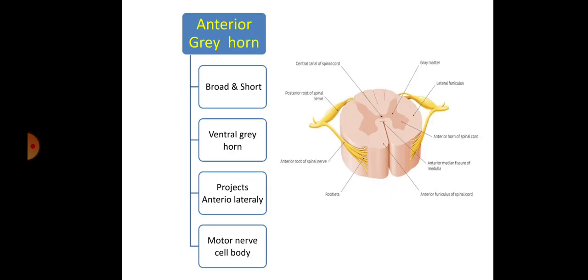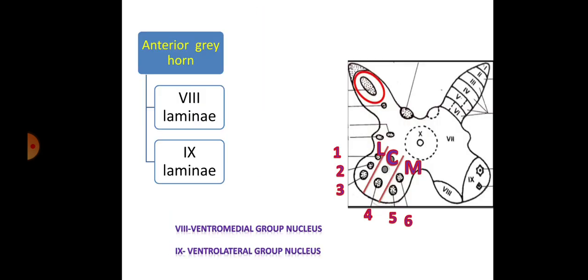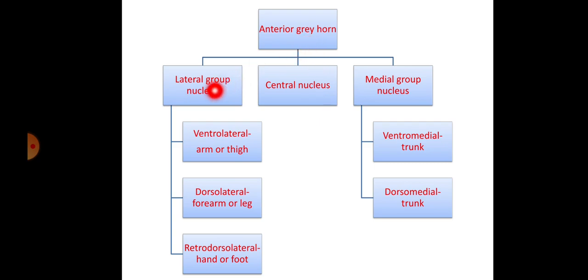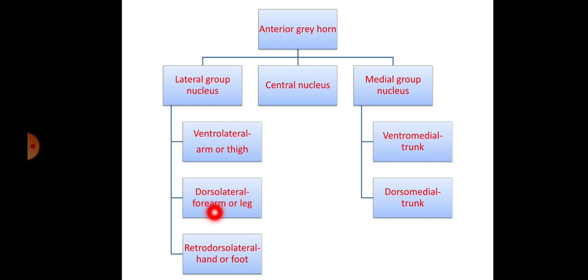This anterior grey horn is also studied according to two theories: nuclear theory and laminar theory. According to nuclear theory, the anterior grey horn is further divided into three groups of nuclei: lateral group, central group, and medial group. The lateral group is further divided into three: ventrolateral nucleus — related to the arm and thigh muscles; dorsolateral nucleus — related to the forearm and leg muscles; and retrodorsolateral nucleus — related to the hand and foot muscles. If the retrodorsal nucleus is damaged, there will be motor loss in the hand and foot.